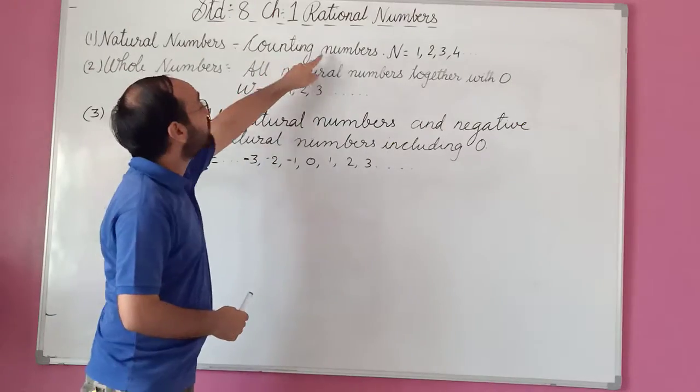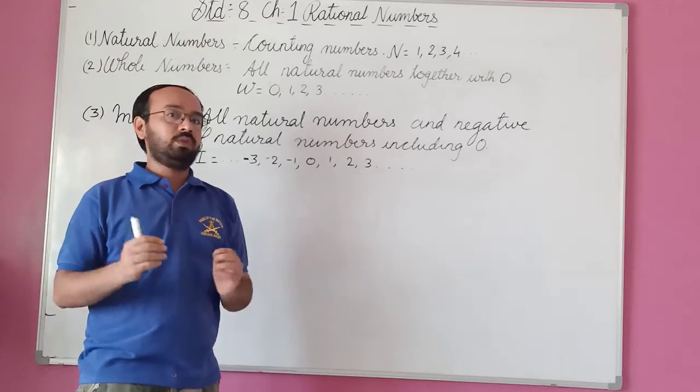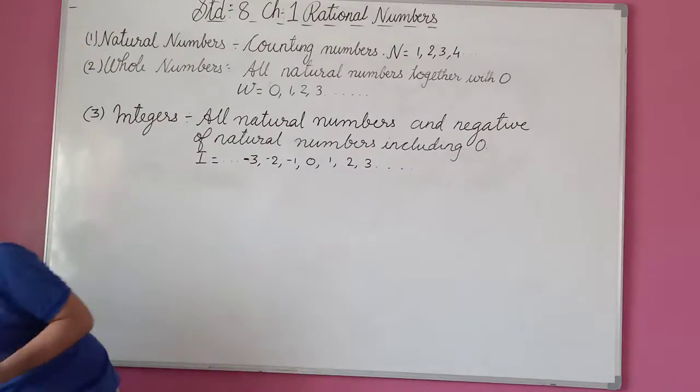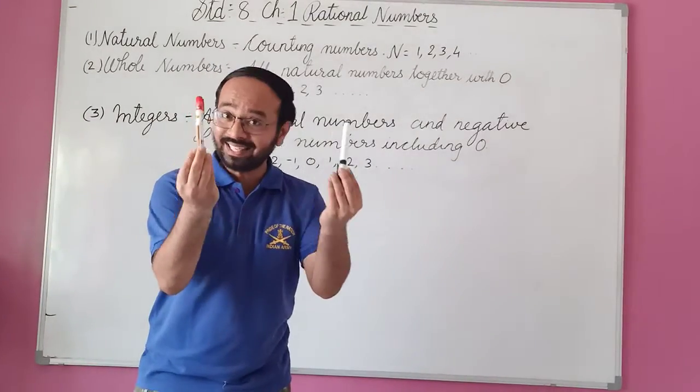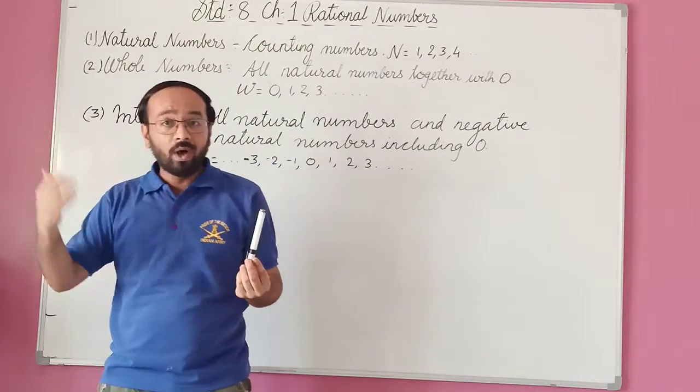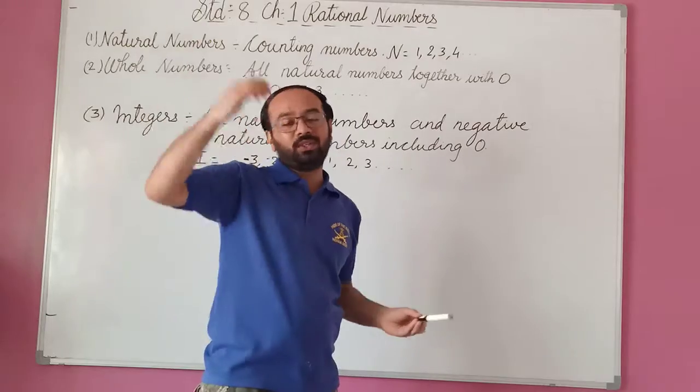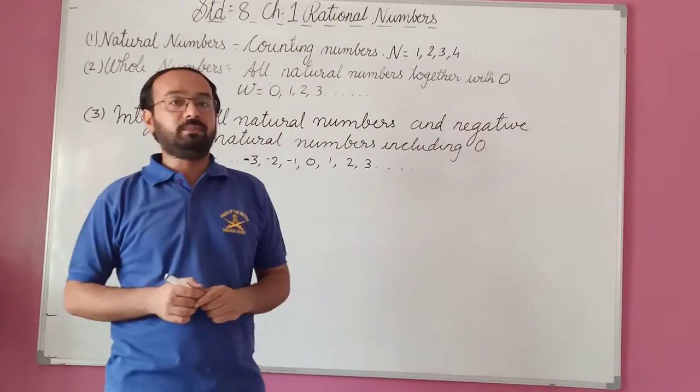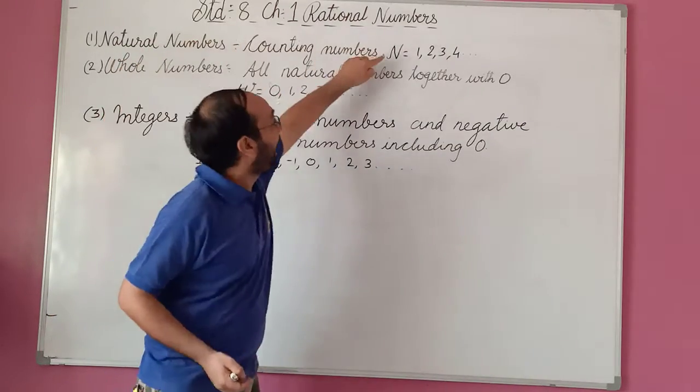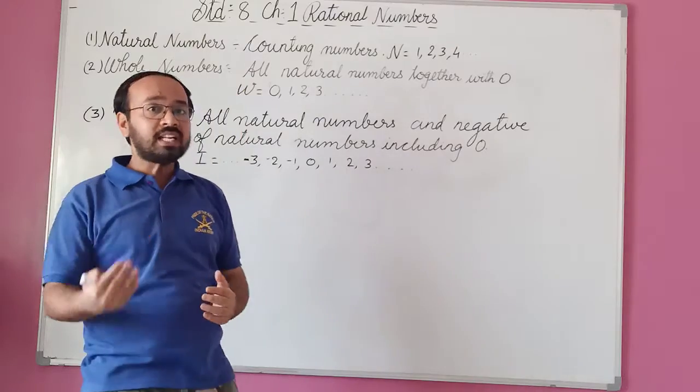The numbers which we can count. Suppose if I say one pen, suppose if I say two pens, I can count this, right? Number of pens. So one, two, three, four, it goes on. These all are the natural numbers and we denote these natural numbers as N.